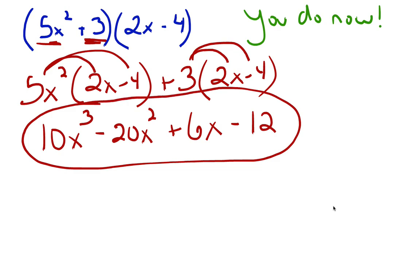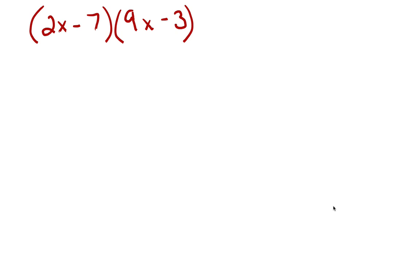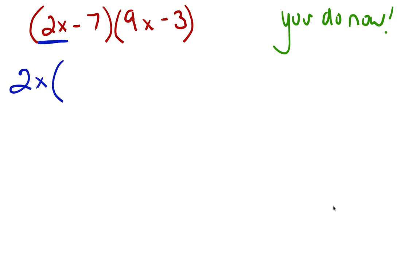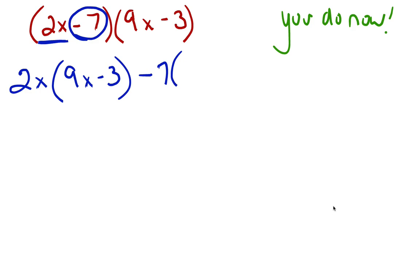Try one more. Copy the problem down. Remember to write the first part as 2x times (9x minus 3), and the second part as minus 7 times (9x minus 3). Notice that these two second-set parentheses are exactly the same.